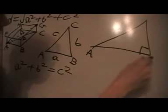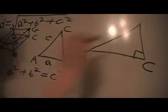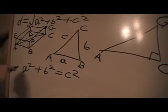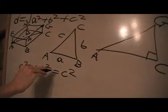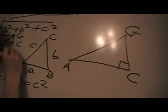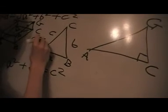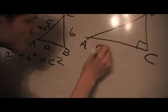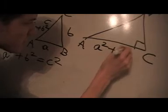And this one's gonna be ACG. From Pythagoras, we know that AC, this length here, is a squared plus b squared. So this length here is a squared plus b squared.